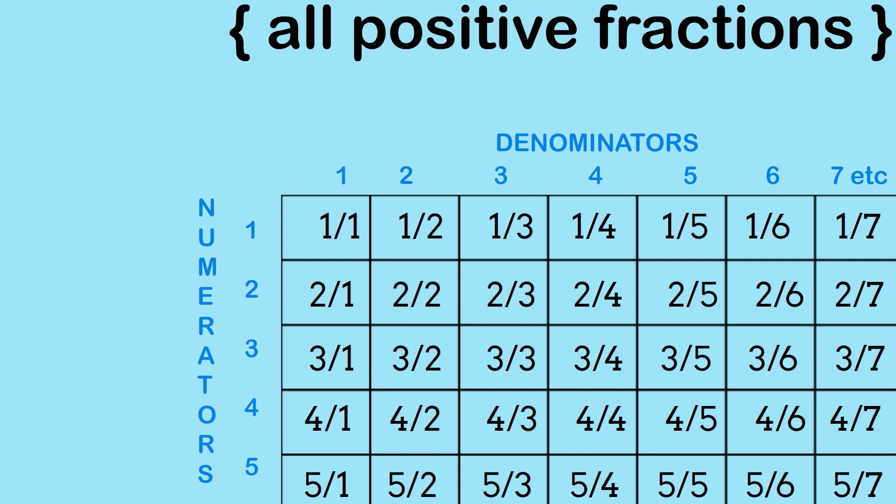Now the next thing is that we don't regard the fraction two-fourths as being different to the fraction one-half. So what I'm going to do is start to cross out all of those fractions that are not simplified, or all of those fractions where the numerator and denominator have a GCD, or a greatest common divisor not equal to one. So all of these ones here, we'll just start knocking them out.